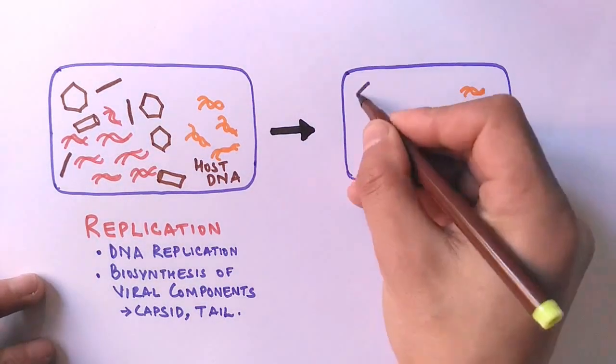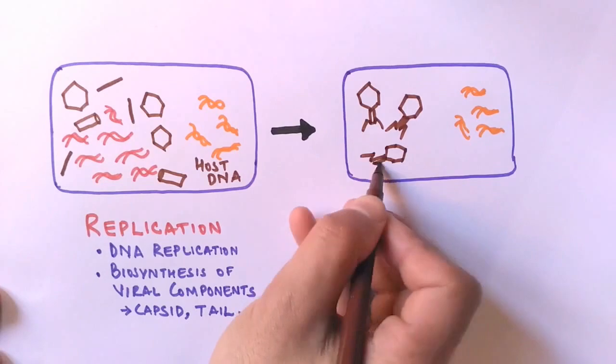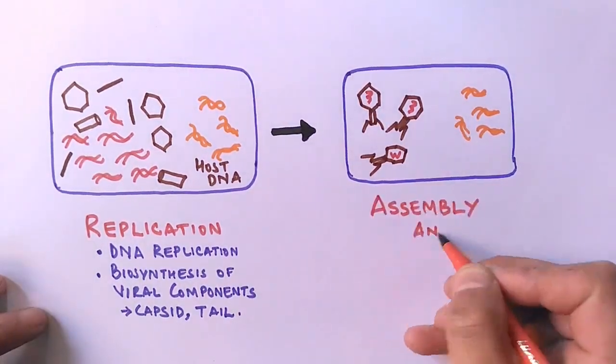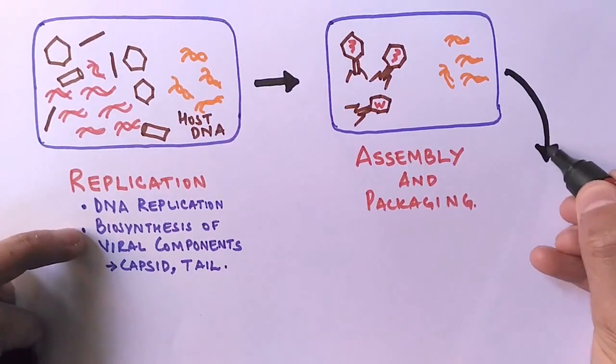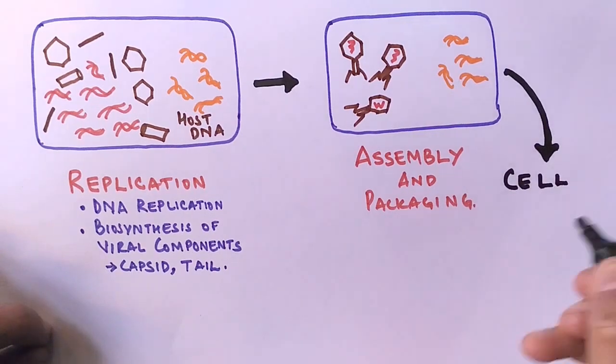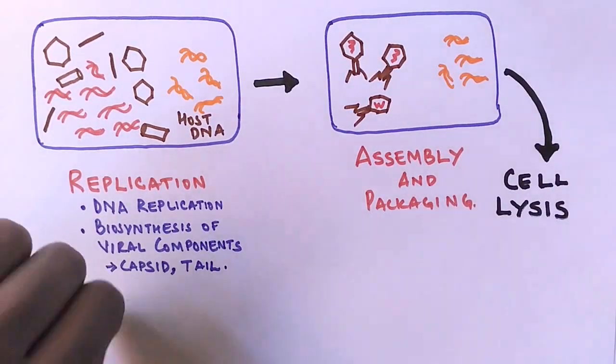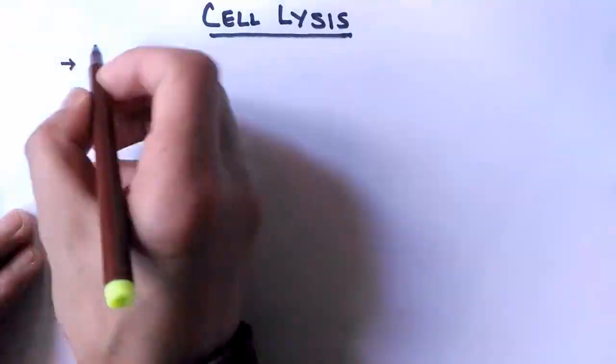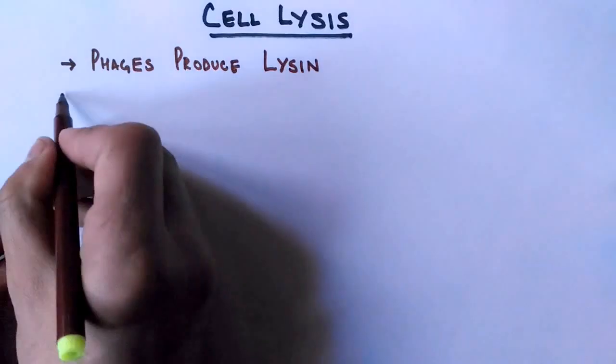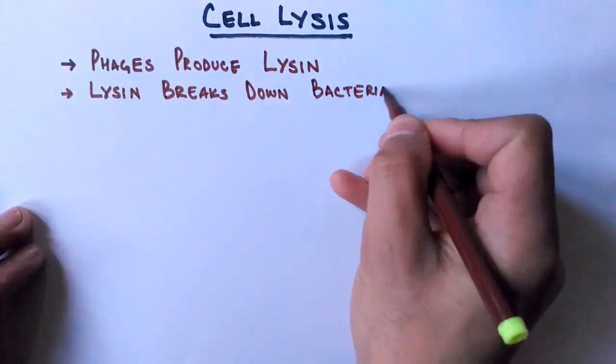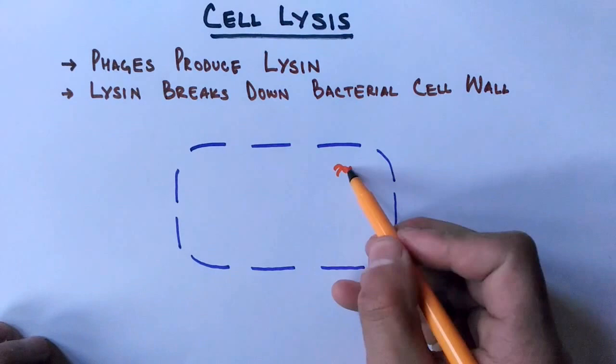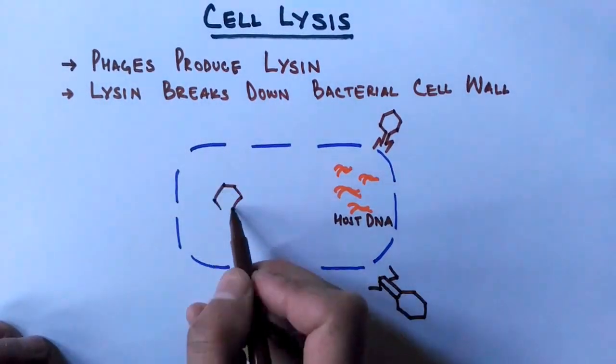After replication there is maturation, there is assembly and packaging of these viral components and we get the complete T4 matured phage. Ultimately the final step of this cycle is the cell lysis. In the cell lysis, the phage produces lysin enzyme which has the capability to break down bacterial cell wall. And after the cell lysis, the T4 phages are released to infect other bacterial cells.